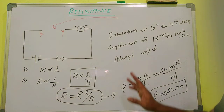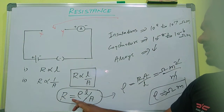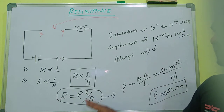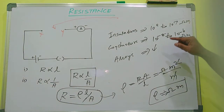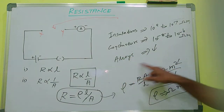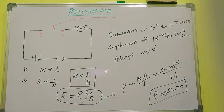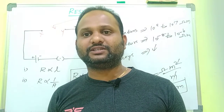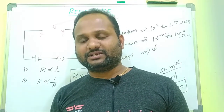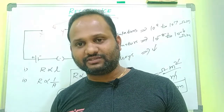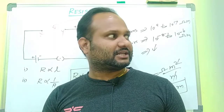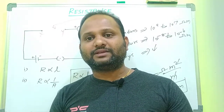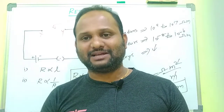So in summary: resistance is directly proportional to length and inversely proportional to area, given by R equals rho L by A, where rho is the resistivity. The resistivity of conductors is low, of insulators is very high, and of alloys is greater than conductors — which is why alloys are purposely used for heating devices. The unit of resistance is ohm, and the unit of resistivity is ohm-meter. I hope all of you understand well. In the next class, we will discuss another new topic. Bye friends, thank you for watching.